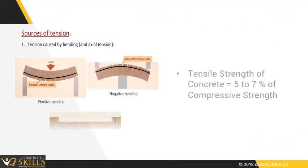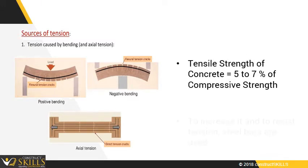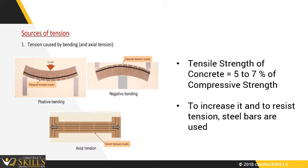The tensile strength of concrete is 5-7% of its compressive strength, which is very poor. To increase the tensile strength of a concrete member and to resist tension, steel bars are used. Steel strengthens the concrete and improves the mechanical performance of the structure.